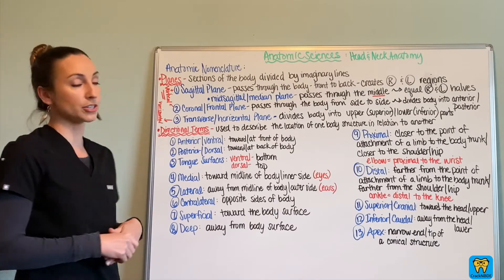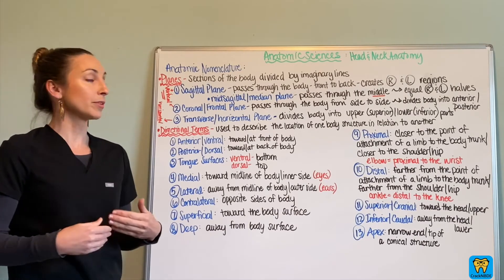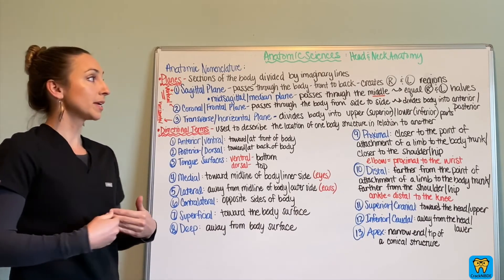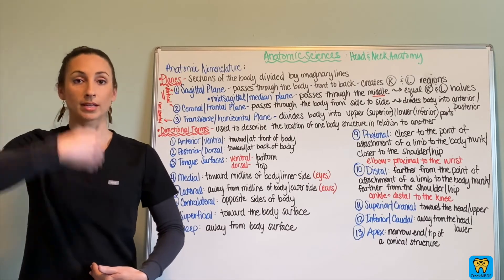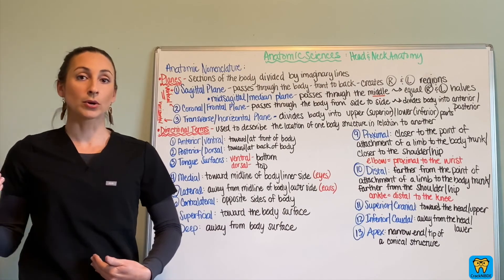First off, we have our sagittal plane. The sagittal plane passes through the body from the front to the back, so that creates right and left. Your sagittal would be going vertically and you're going to be creating...